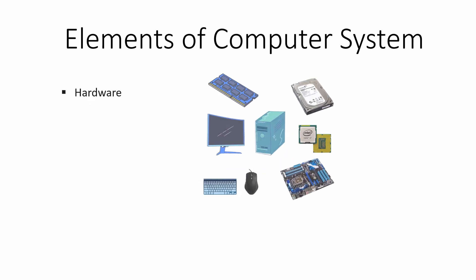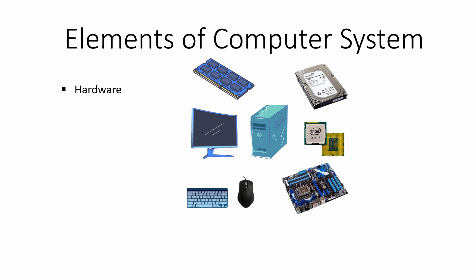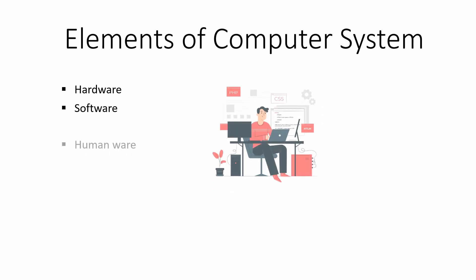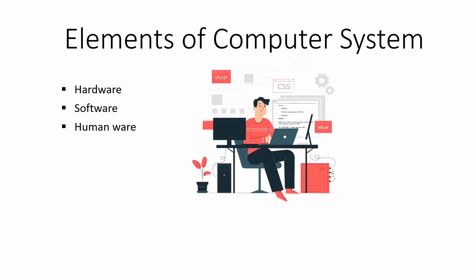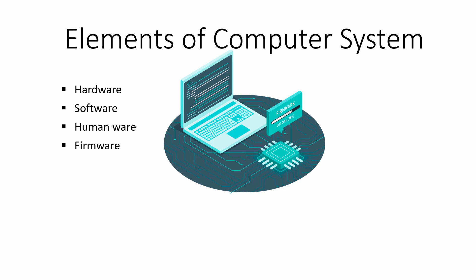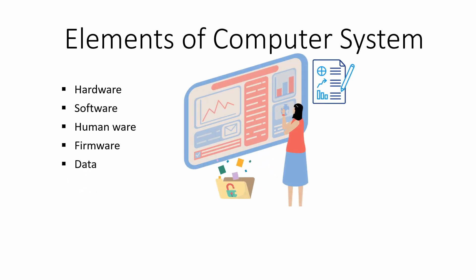They are computer hardware, which are the physical parts of the computer; software, the logical parts of the computer; humanware, the user of the computer who operates the computer; firmware, a special type of software that is installed during the manufacturing of the computer; and all the data inside the computer. These five are the elements of a computer system.